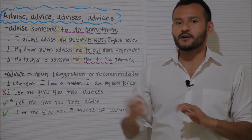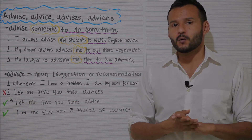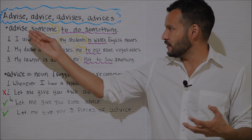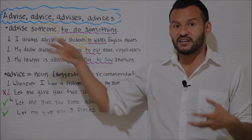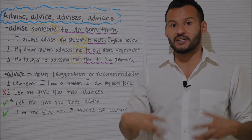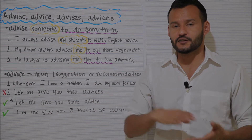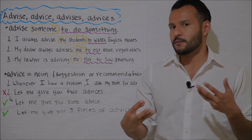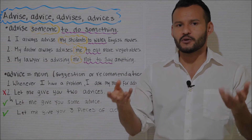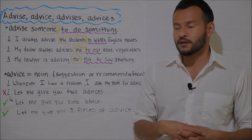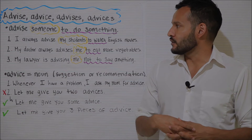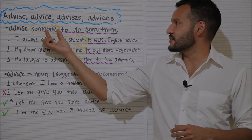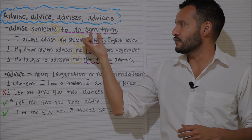Let's get started with the word 'advise' with S. If you spell it this way, it is a verb. It means to give a suggestion or a recommendation to someone about a particular problem or in a particular situation. The structure that we typically use is: we advise someone to do something.